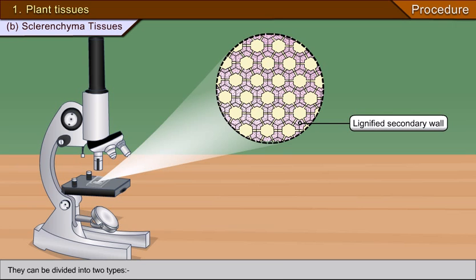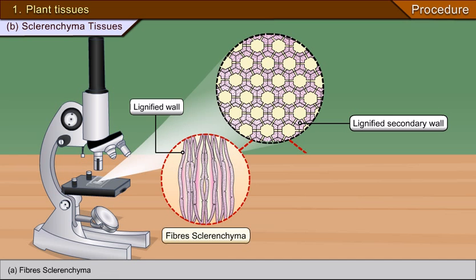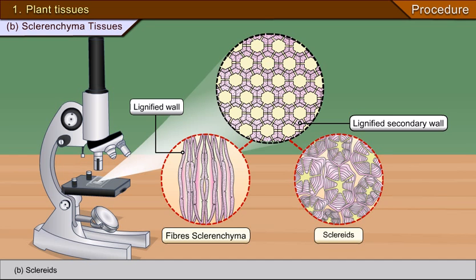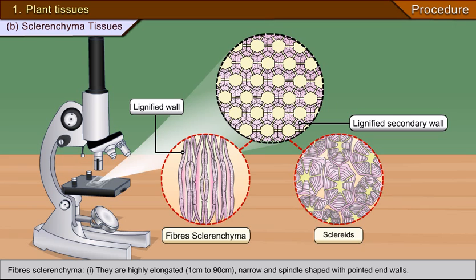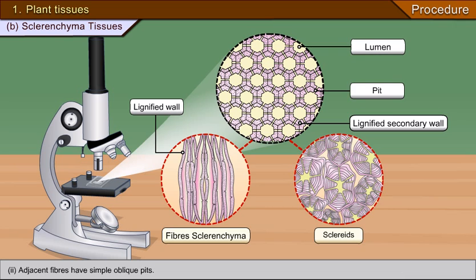Sclerenchyma can be divided into two types: A. Fibrous sclerenchyma and B. Sclerides. Fibrous sclerenchyma cells are highly elongated, narrow and spindle-shaped with pointed end walls. Adjacent fibres have simple oblique pits. The only function they perform is to provide mechanical strength; otherwise these fibres are empty and dead.